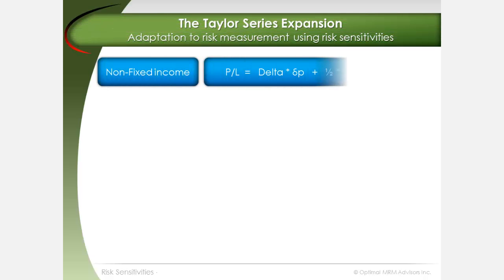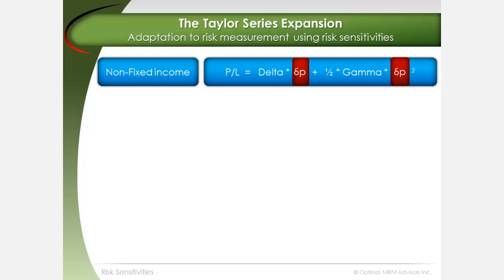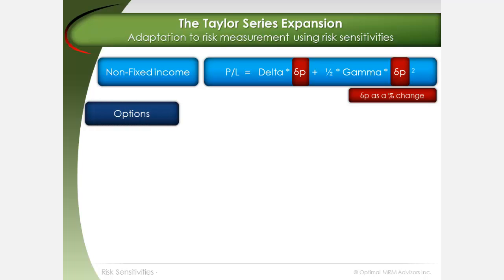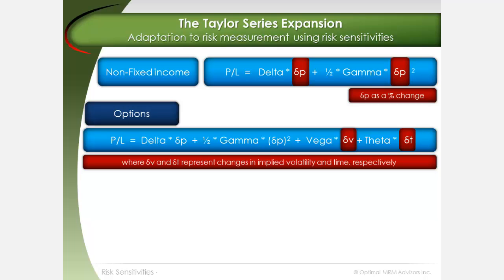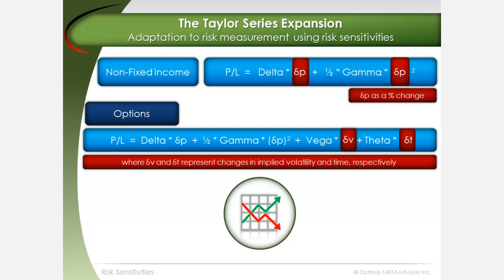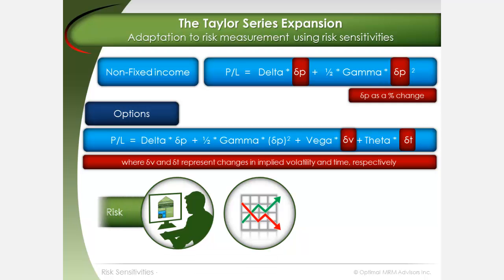For equities, commodities, and FX investments, the change in underlying risk factor prices, delta P, is expressed as a percentage price change and is used to estimate P&L using risk sensitivities. For options whose price is a function of implied volatility and time, in addition to price or rate, we can expand the P&L estimate equation using other first order Greeks such as vega and theta. With this equation, it is possible to estimate P&L for an investment position or an entire portfolio of positions. Risk practitioners can use this function as a reasonableness check against official value at risk and stress scenario risk, and finance can also use it as a reasonableness check against official profit and loss based on full revaluation.